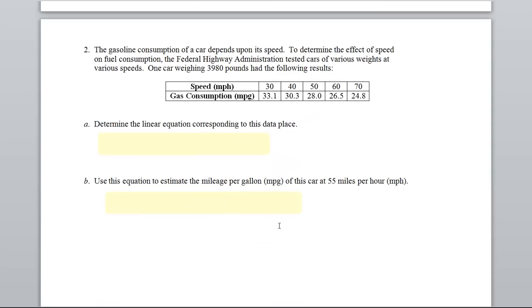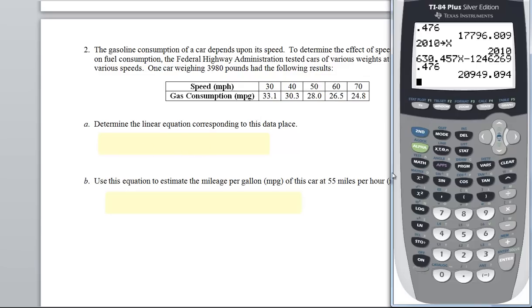I've got another example. Gasoline consumption of a car depends upon its speed. To determine the effect of speed on fuel consumption, the Federal Highway Administration tested cars of various weights at various speeds. One car weighing 3,980 pounds had the following results. So I'd like you to pause me and see if you can go find the equation.